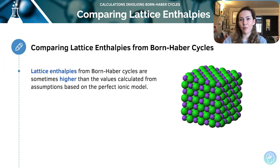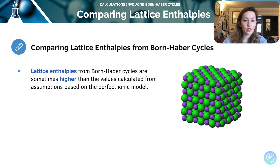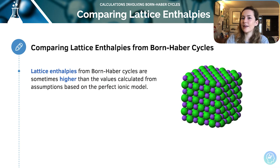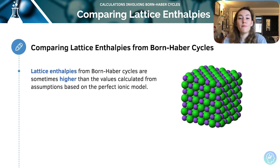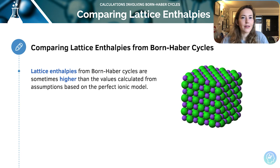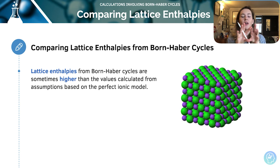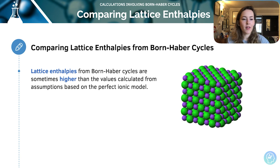When you get a value for lattice enthalpy, a lot of students don't know what that means — it's just a number, but it's really useful. Lattice enthalpies from Born-Haber cycles are sometimes actually higher than the true calculated value because we're indirectly calculating it. This is because many ionic compounds aren't actually purely ionic — they've got some covalent character. There's actually a spectrum between ionic and covalent character, and this is a really good example of that.